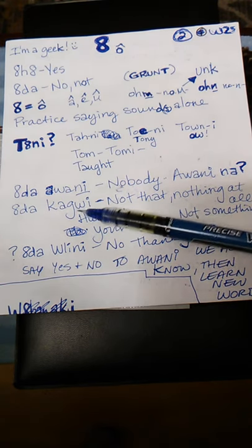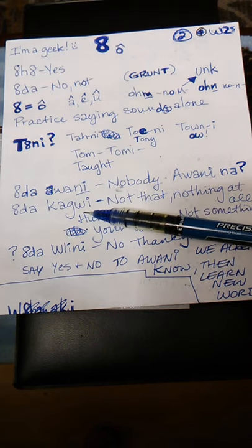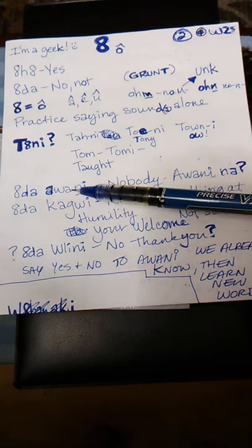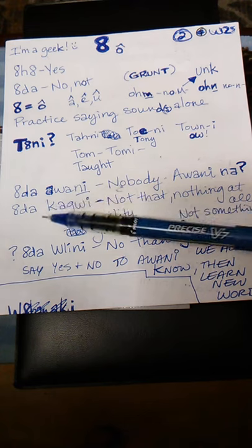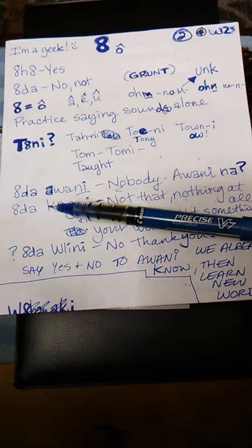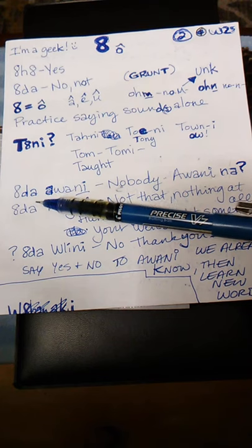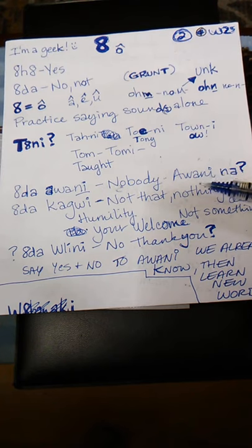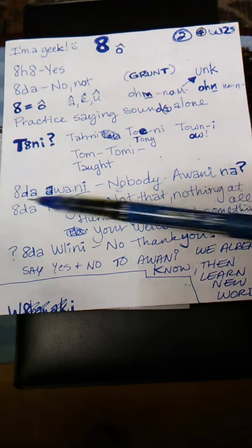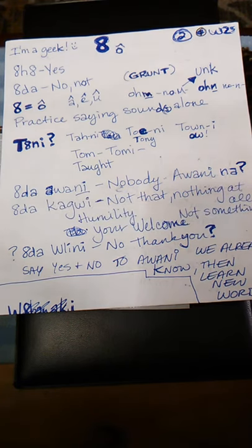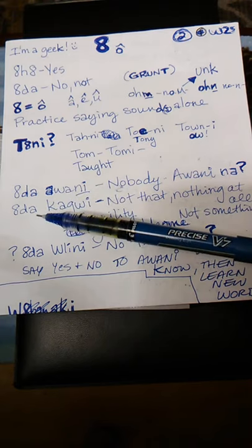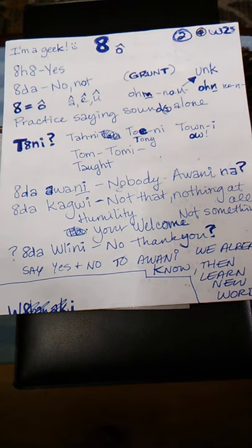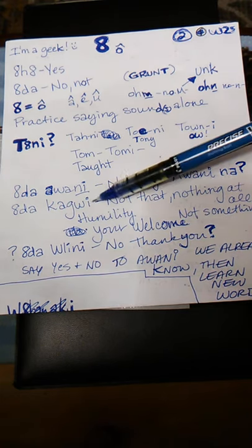We're going to use two new things: awani and kagui. Awani, we know, is who — a living creature or living being. And kagui is what — a thing. So onda awani is nobody, because onda means no or not, so it's not anybody — nobody. Awani-na means who's that? Onda awani — nobody. And then there's onda kagui, which means not that, nothing at all — and within the community it means you're welcome, as an answer to someone saying thank you.